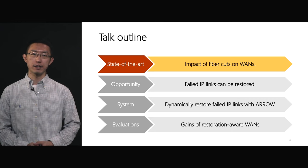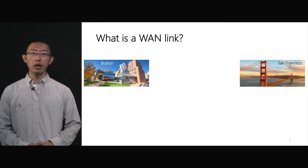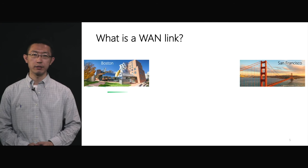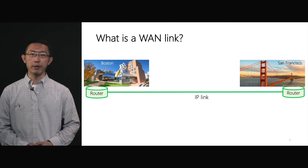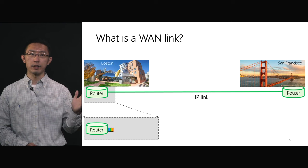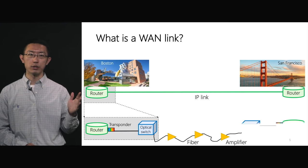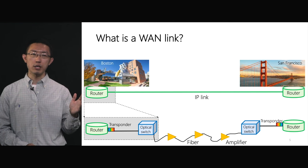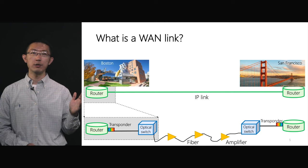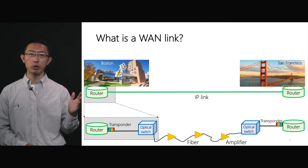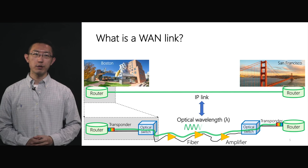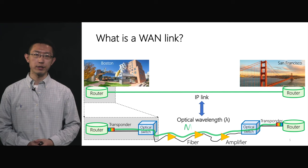Let me start with the impact of fiber cuts on WANs. How are optical fibers related to WAN links? Assume that we have an IP link between Boston and San Francisco. This IP link can transmit data between router ports. If we zoom into one end of this IP link, we see that right after the router ports, there is a device called optical transponder that converts the signal from electrical domain to optical wavelengths. After optical transponders, we use optical switches to add, drop, or switch optical wavelengths in the optical fiber network. On the fibers, we place optical amplifiers every 80 kilometers to compensate power attenuation during signal propagation. Therefore, an IP link between Boston and San Francisco is actually a logical connection supported by provisioned wavelengths, or lambdas, on fibers.